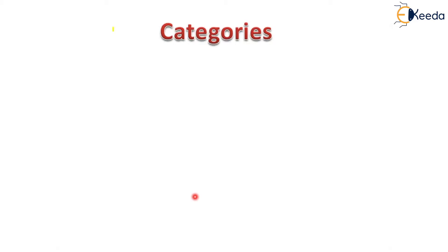The next topic is the categories. Three different categories are available under sub-zero heat treatment process. The first category is shrink fitting. Sub-zero heat treatment process can be used in shrink fitting to get better results from the material. All industries that require shrink fitting procedure can adopt sub-zero heat treatment.